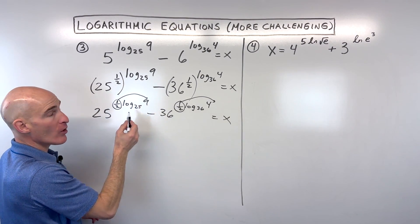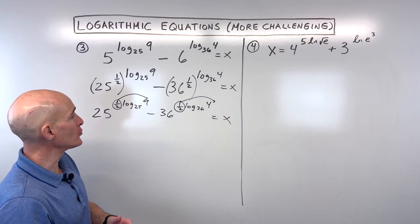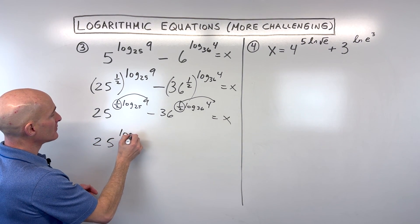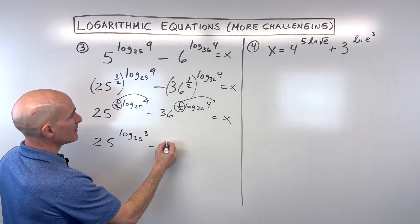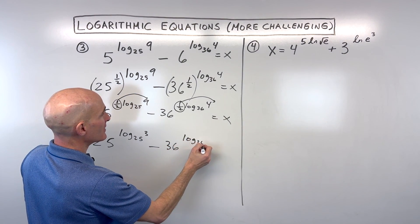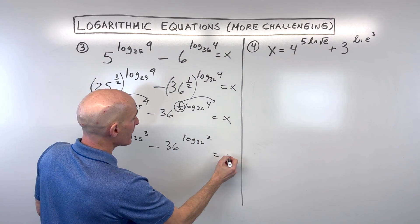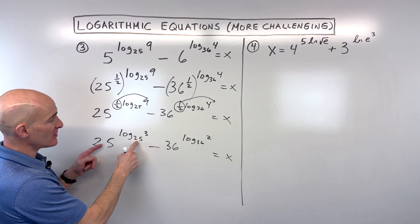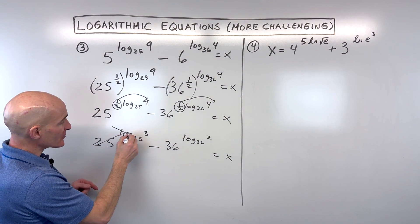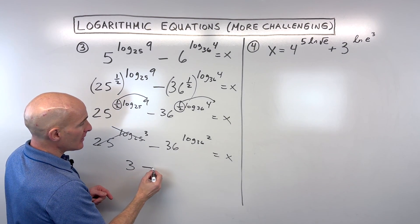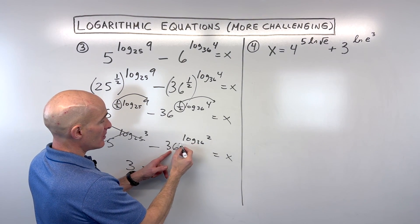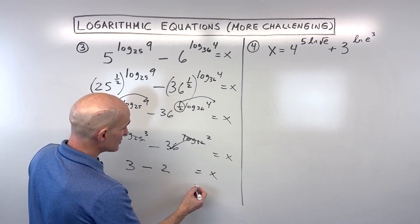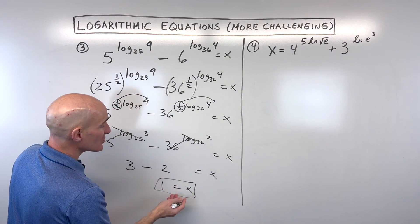So now, when I think of 9 to the 1 half power, that 1 half power is the square root. So that's saying like the square root of 9, which is 3. So this comes out to 25 log base 25 of 3 minus 36 log base 36 of the square root of 4, which is 2. So now look what we have. We have an exponential function. We have a logarithmic function. The bases are the same. These are inverses. They undo one another. That leaves us with 3. Over here, same thing. We have 36 raised to the log base 36. These are inverses, and we just get 2. And 3 minus 2, of course, is 1. And we solved it.